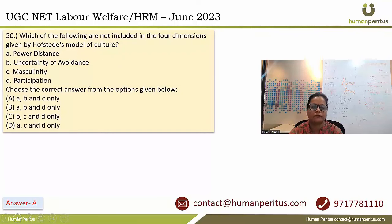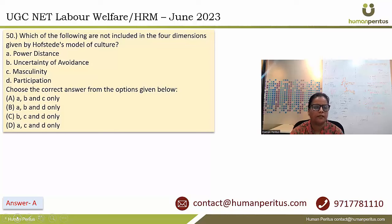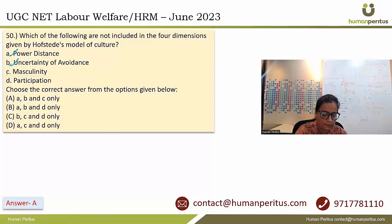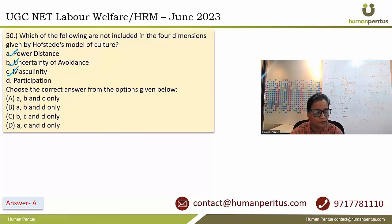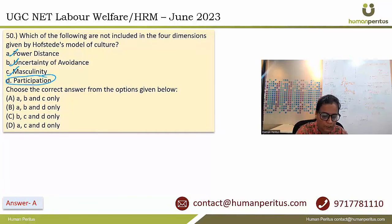Which of the following are not included in the four dimensions given by Hofstede's model of culture? Power distance, uncertainty avoidance, and masculinity are all dimensions of Hofstede's model. The fourth dimension is individualism and collectivism. Participation is not one of the four dimensions. Answer is option A.